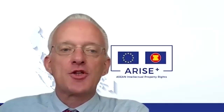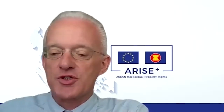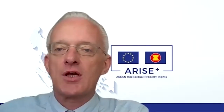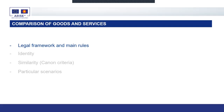The final part of our training is on the comparison of goods and services — specifically the similarity of goods and services when comparing trademarks. We're going to look at this from different points of view: first, the legal framework and the main rules which make up the comparison of goods and services.